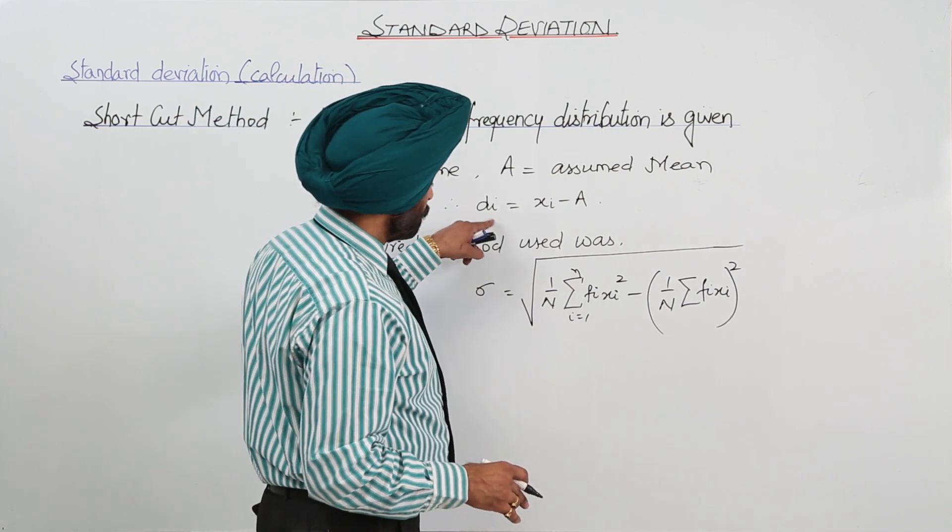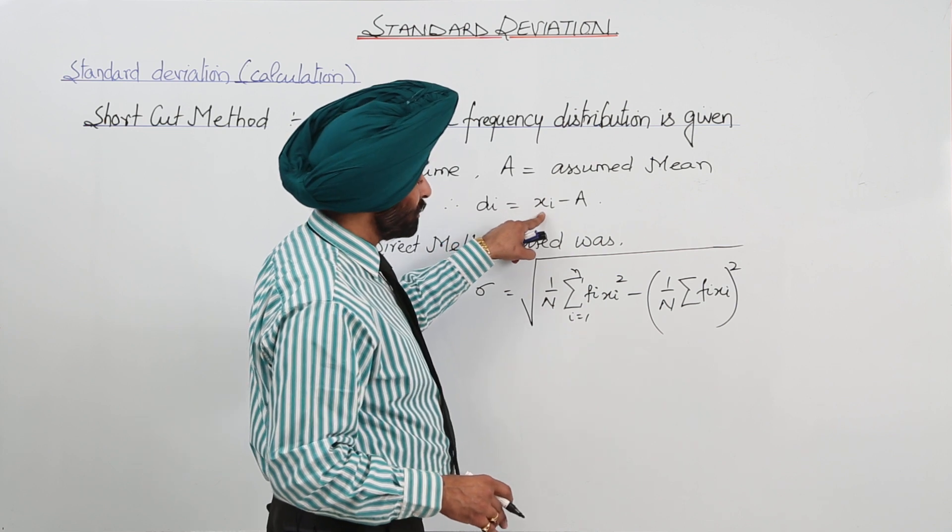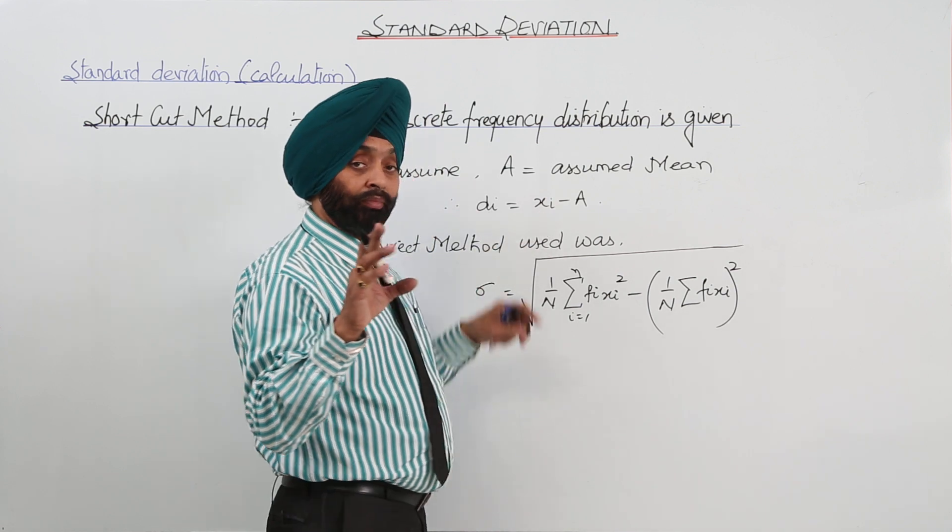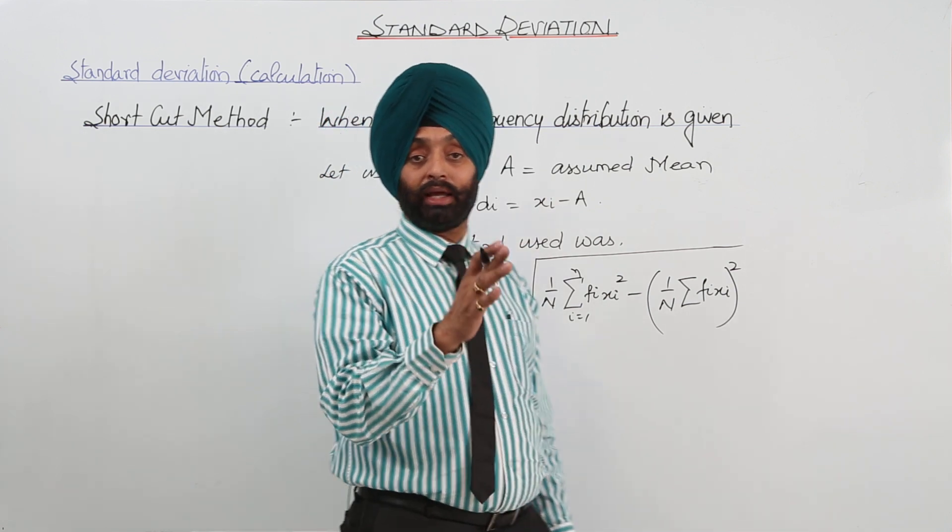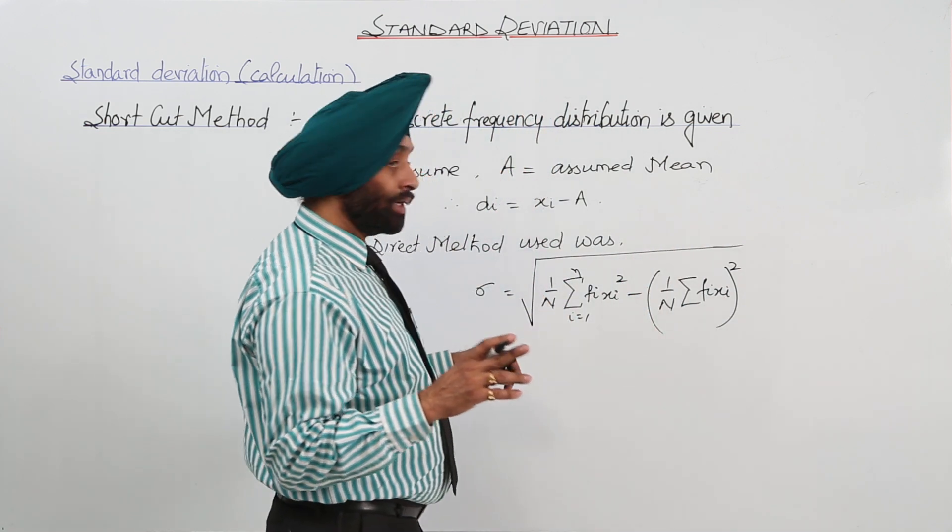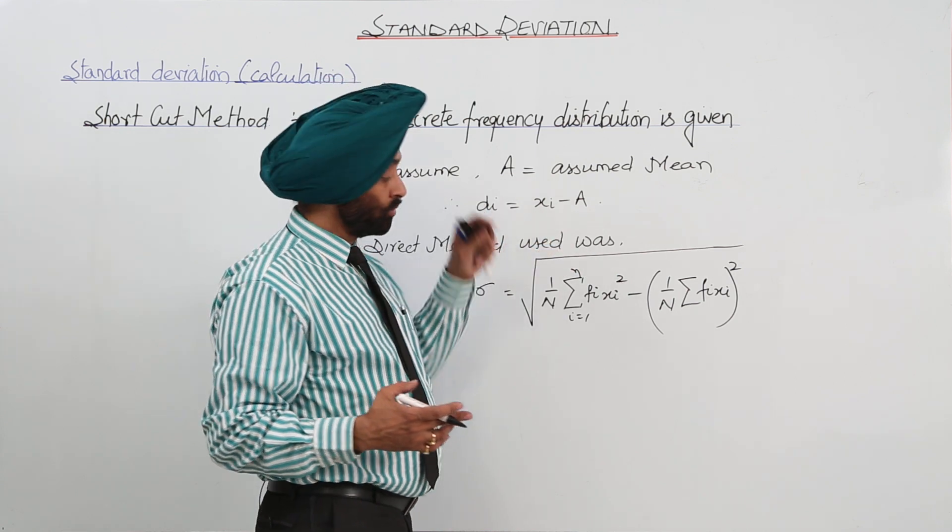We have just, from here, we have got that DI will be XI minus A. So earlier we were having in a table only XI. We were used to, for example, you were just multiplying FI and XI. In place of XI, we are taking a new term that is DI. And DI is what? XI minus A.